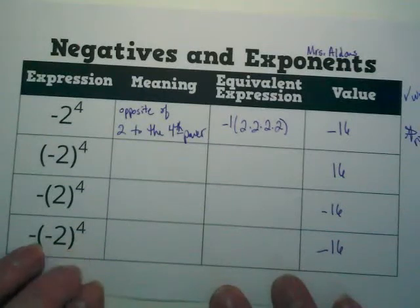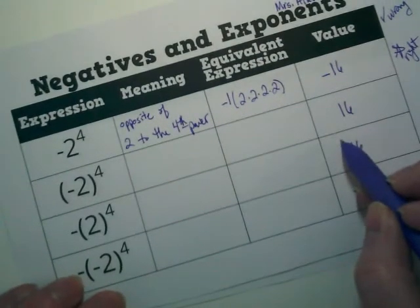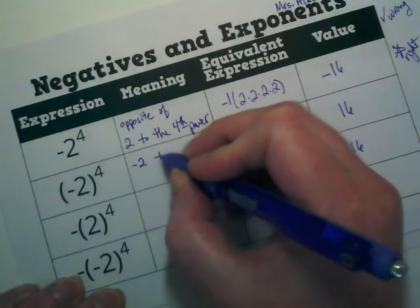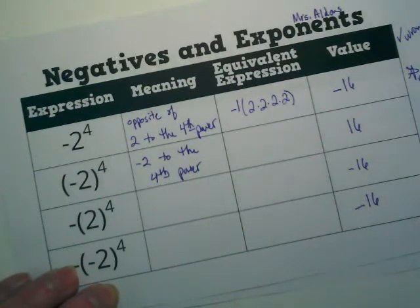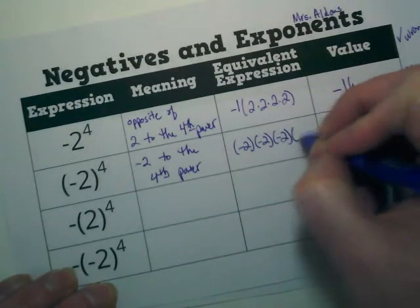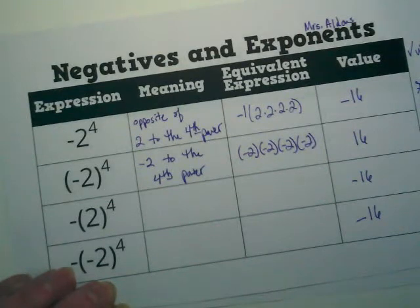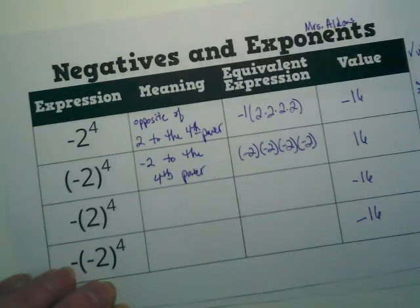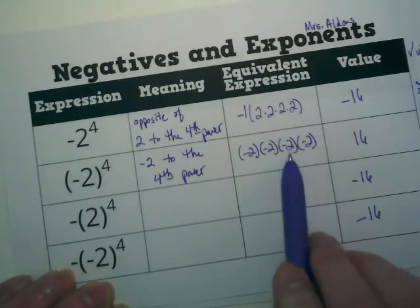Can you take a look and see if you notice a pattern with the parentheses? This is our only one that is positive. This is negative 2 to the fourth power. This would be written as negative 2 times negative 2 times negative 2 times negative 2. In my very visual learning brain, I see this as the negative is trapped inside the parentheses with the 2. Do you guys see what I'm seeing there?